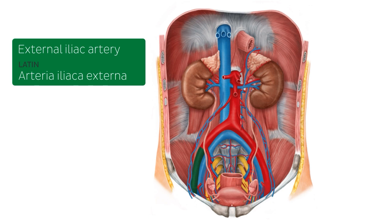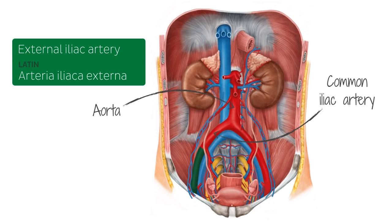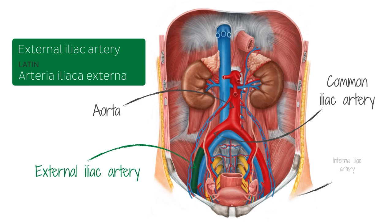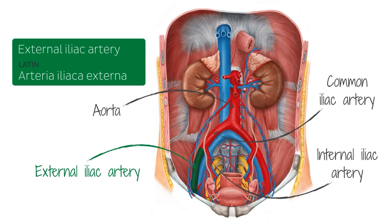As you can see in this image, the aorta bifurcates into two common iliac arteries. Each common iliac artery then bifurcates into the external iliac artery and the internal iliac artery. Two notable branches of the external iliac artery are located in this region here, so let's discuss them in more detail.